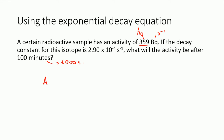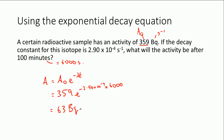So let's put our equation down: A equals A-naught e to the minus lambda t. Substituting our values — no rearrangement required — A-naught is 359 becquerels, multiplied by e to the minus 2.9 times 10 to the minus 4 times 6,000 seconds. When you punch all that into a calculator, you get 63 becquerels. So after 100 minutes, the activity will have decayed from 359 becquerels to 63 becquerels. As long as you're happy with the exponential function, that's a reasonably straightforward calculation.